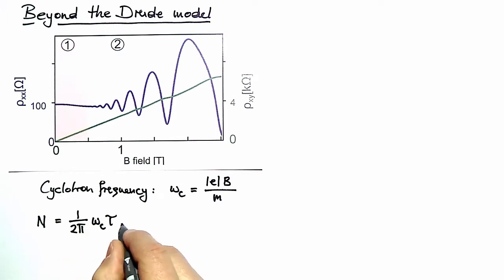We can rewrite this expression easily, taking the definition of ωc and also remembering the definition of the mobility into mobility times magnetic field divided by 2π.